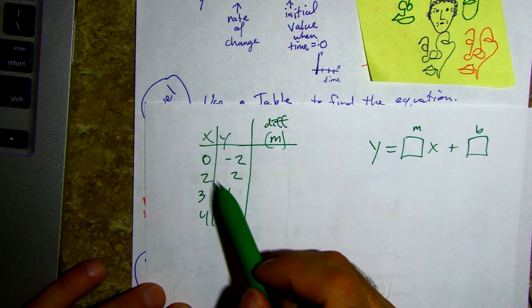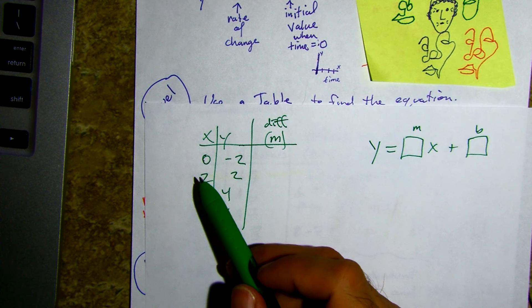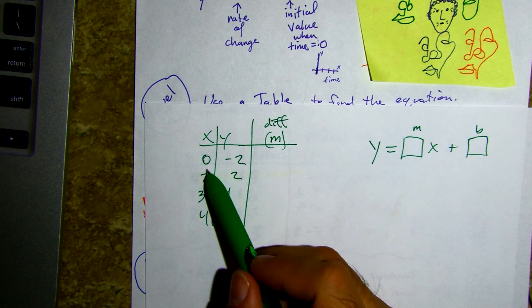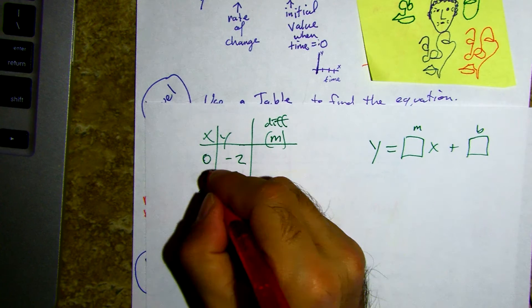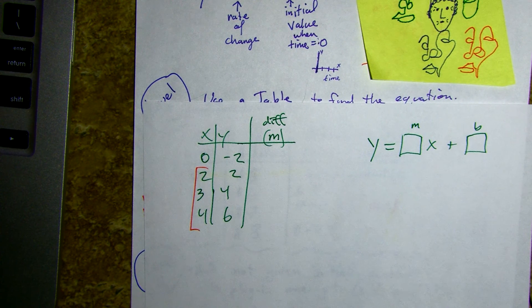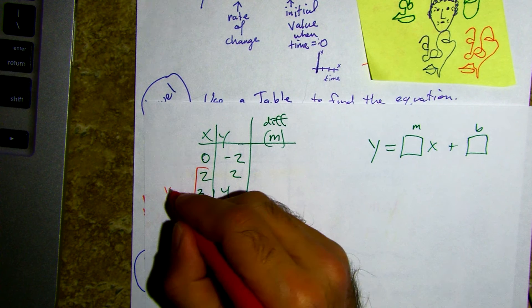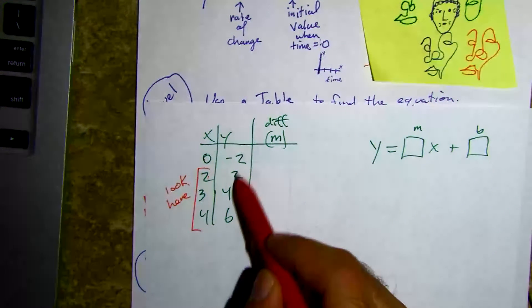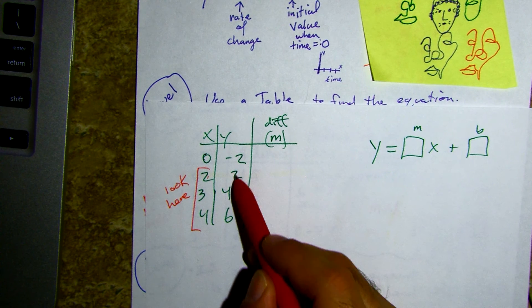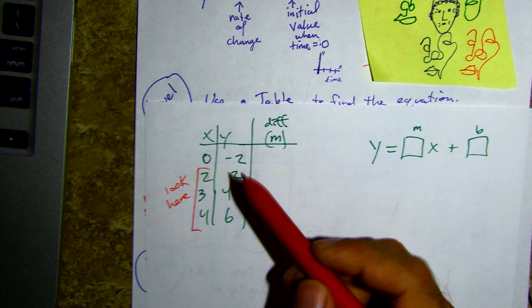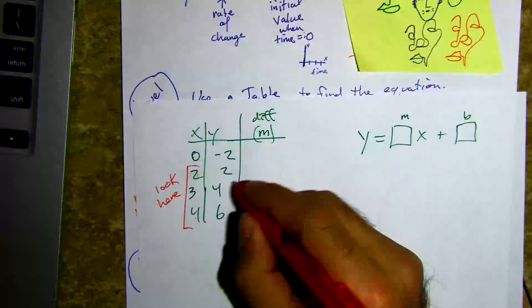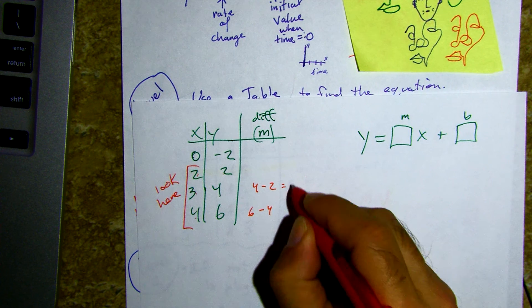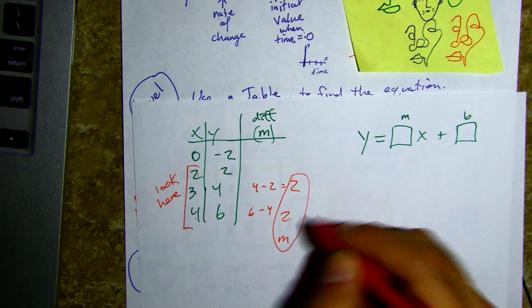First thing to notice: are these in order? They're going up in ascending order. But look — one is missing right here. So because one is missing, I'm going to focus on what kind of increments I have between two and four, because between two and four those numbers are sequential. From two to three is four minus two; three to four is six minus four — we get two. So I know that my slope has to be two.